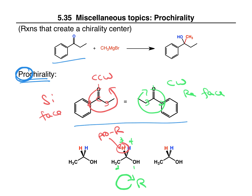For the other hydrogen — if we change the blue hydrogen to deuterium, we still have the same priorities one, two, three, and going clockwise gives R, but our lowest priority is forward, so we flip the assignment and this is S. So if we change the blue hydrogen to deuterium, this would have the S configuration. Therefore, the blue hydrogen is called pro-S.